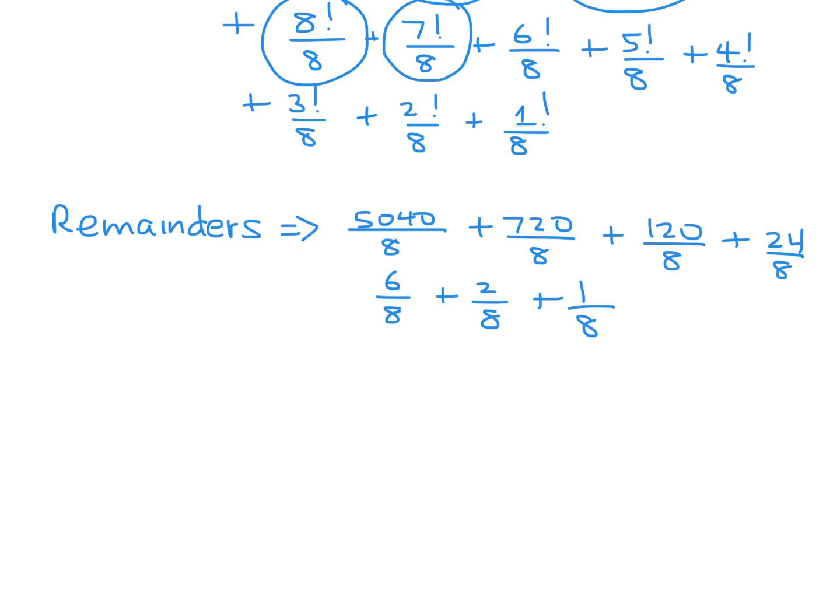Now let's figure out what are these actual remainders. So when you take 5040 and divide by 8, the remainder is 0. 720 divided by 8, that remainder would also be 0. 120 divided by 8 would give a remainder also of 0. 24 divided by 8 also gives a remainder of 0. 6 divided by 8 gives a remainder of 6. And then 2 would give a remainder of 2. And then 1 would give a remainder of 1. So we have a total remainder of 6 plus 2 plus 1, which is 9.